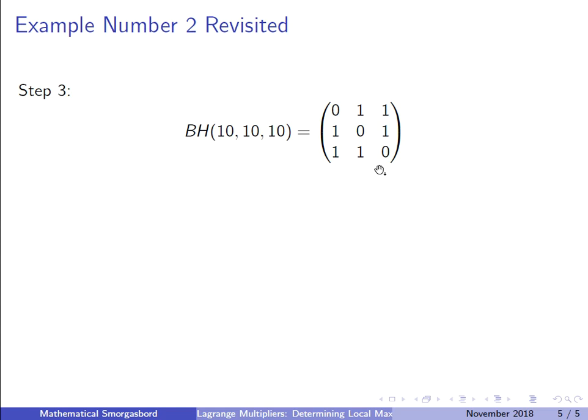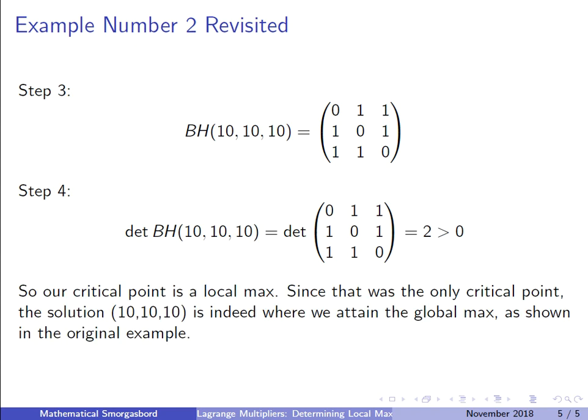So what this really means is regardless of what critical point we have found, this matrix would still be the same. Now we compute the determinant, which is 2, and this is greater than 0. So what this means is that our critical point is a local maximum, and that's what we had discovered in the original problem as well.